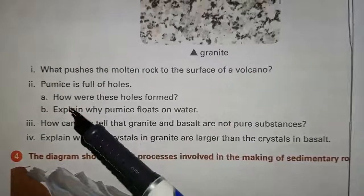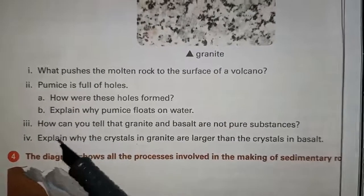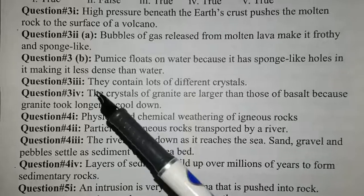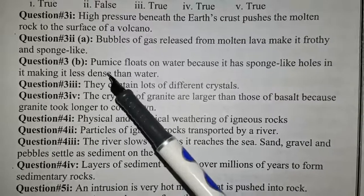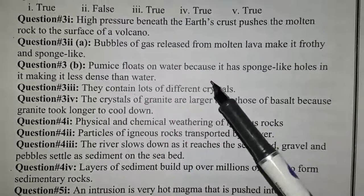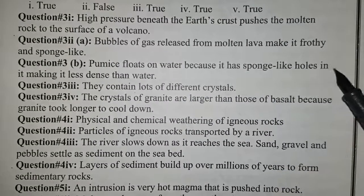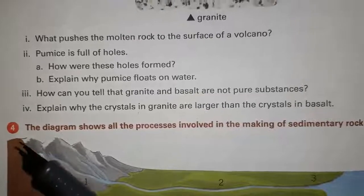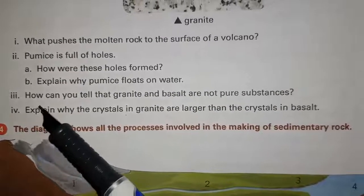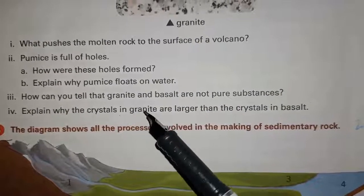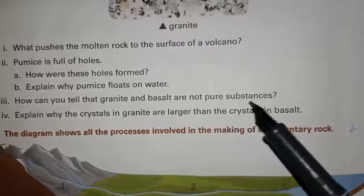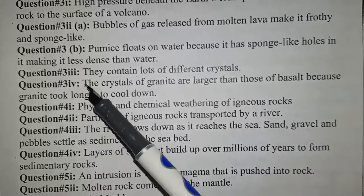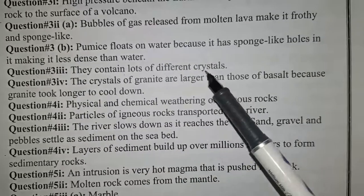Question number 3, part 2B: explain why pumice floats on water. Answer: pumice floats on water because it has sponge-like holes in it, making it less dense than water. Part 3: how can you tell that granite and basalt are not pure substances? The answer is: they contain lots of different crystals.